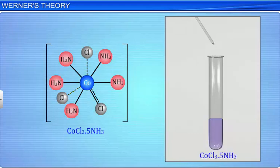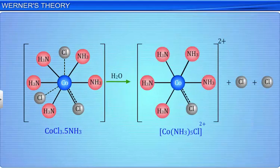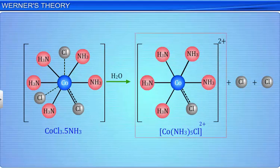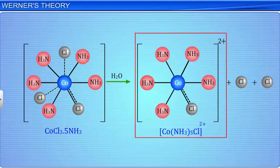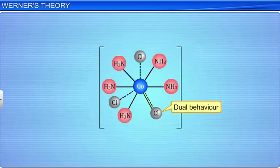On ionization, this complex will give 3 ions: 1 [Co(NH3)5Cl]2+ ion and 2 chloride ions. As can be seen from its structure, 1 chloride ion, which is playing a dual role, is shown by a thick as well as a dotted line.